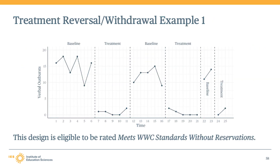This is an example of a treatment reversal withdrawal design with six phases split into two conditions, which is two more phases than are strictly required by the WWC standards. The last two phases have fewer than the minimum number of observations required for the study to meet the WWC standards at any level. However, we can consider the first four phases of the design as a subset. The design has six data points in the first baseline phase and five data points in the following three phases. There are three opportunities to demonstrate an intervention effect, one at each of the first three phase changes. This finding would potentially still be eligible to receive a research rating of meets WWC standards without reservations if it met all other requirements.